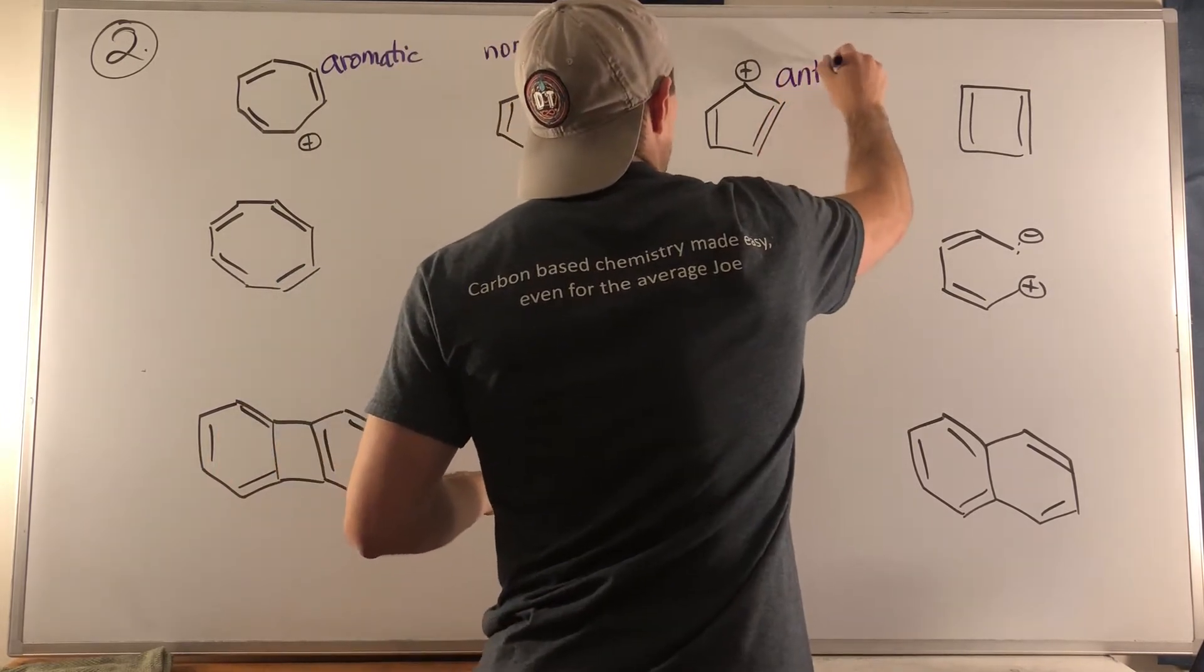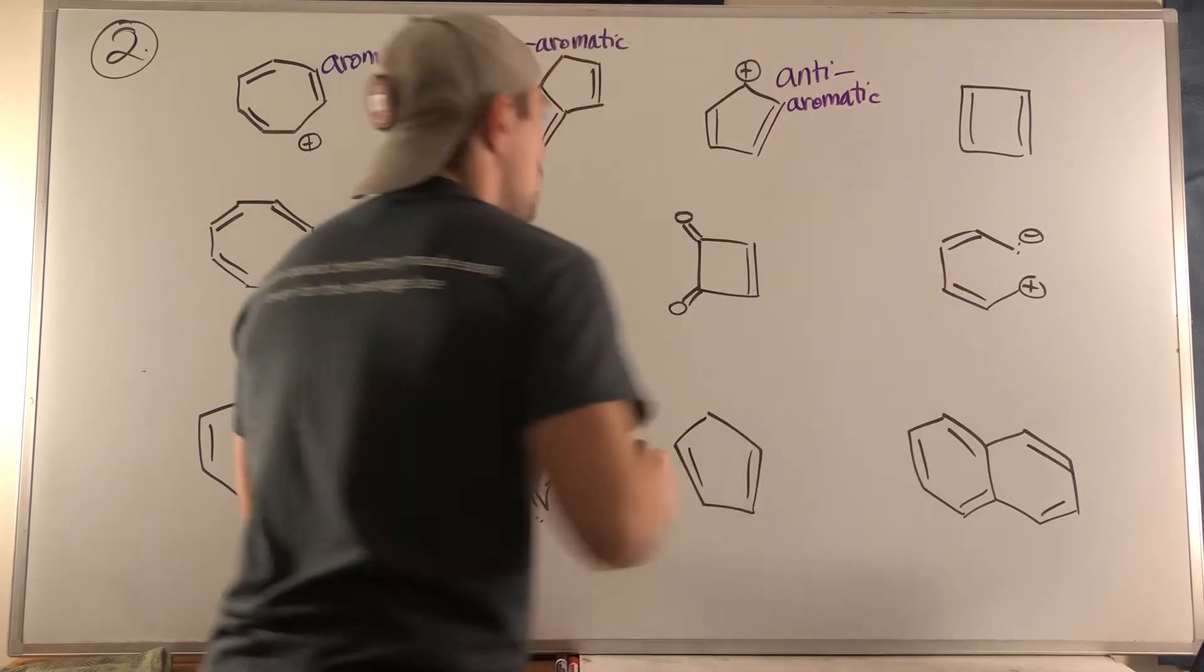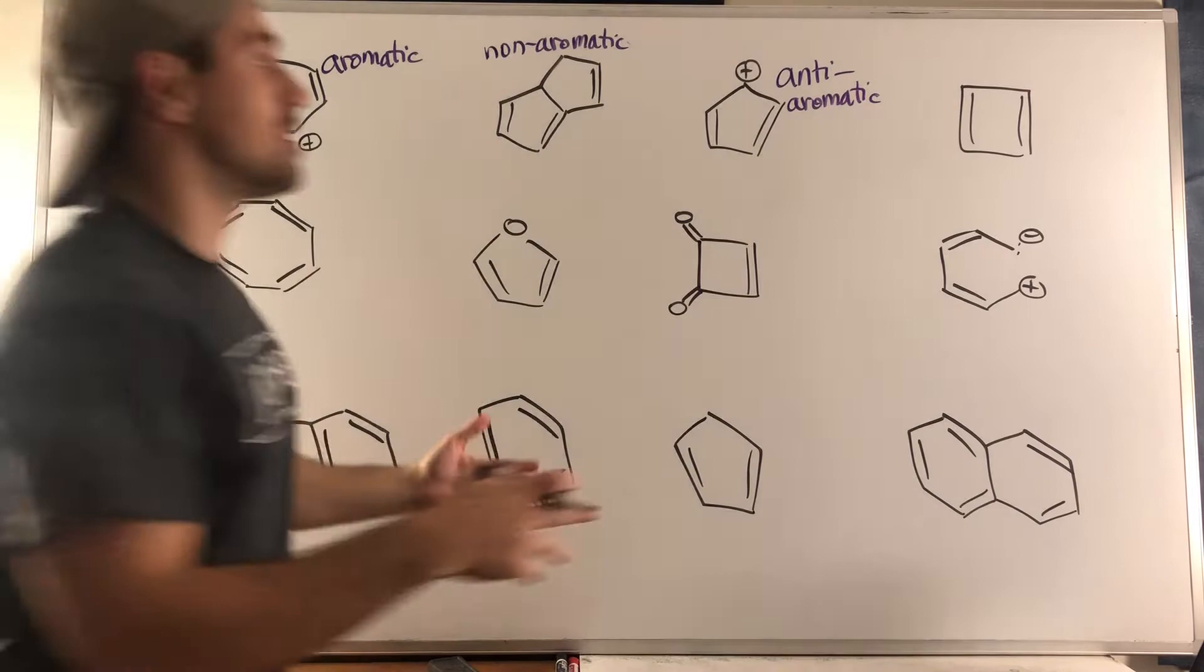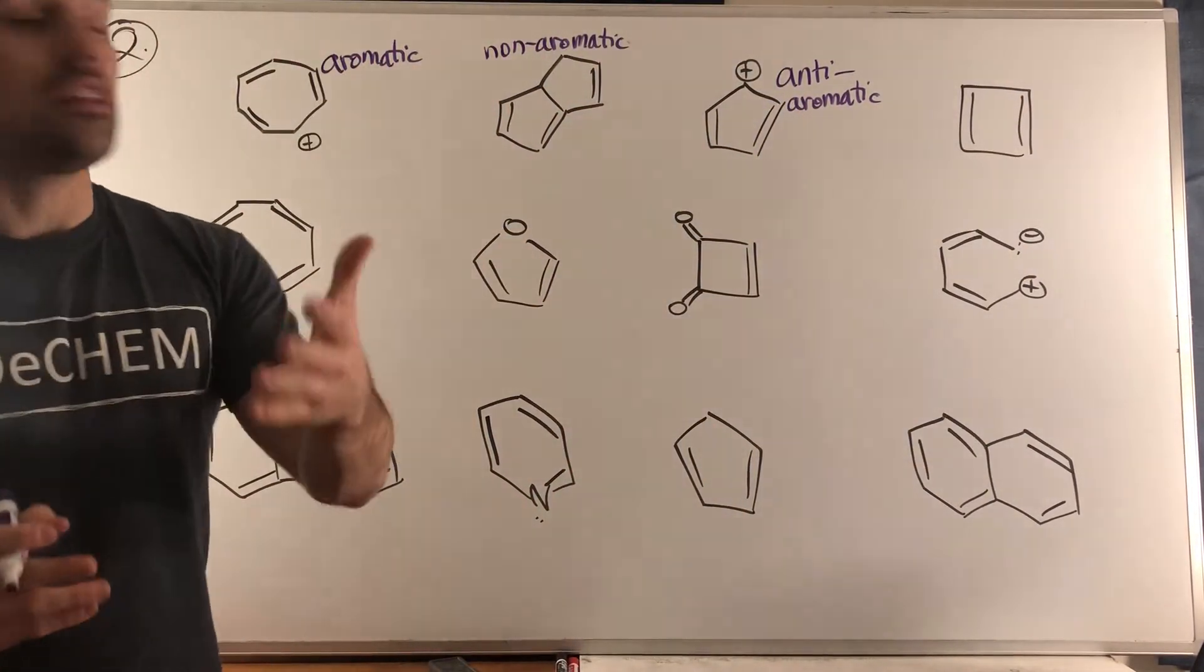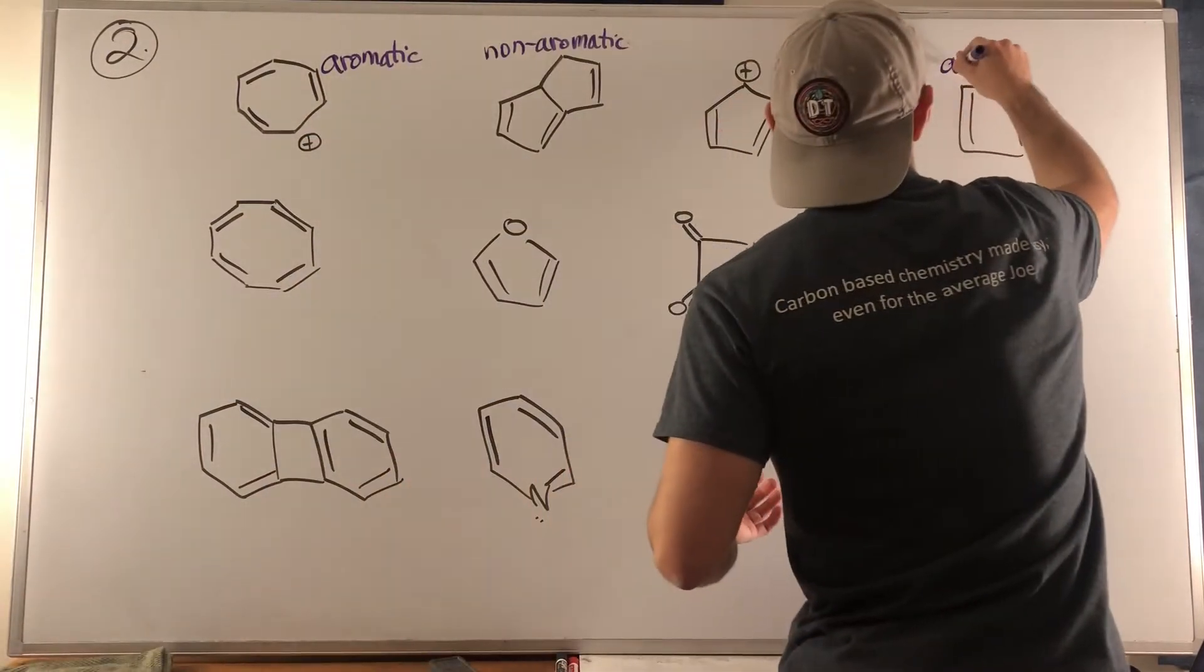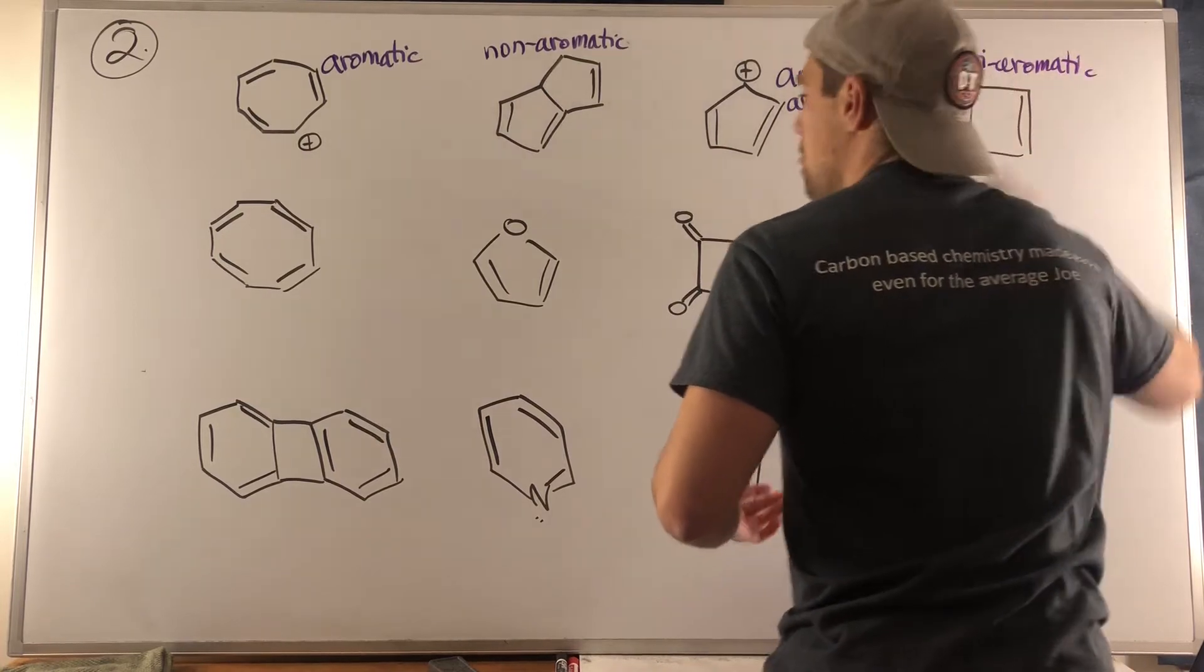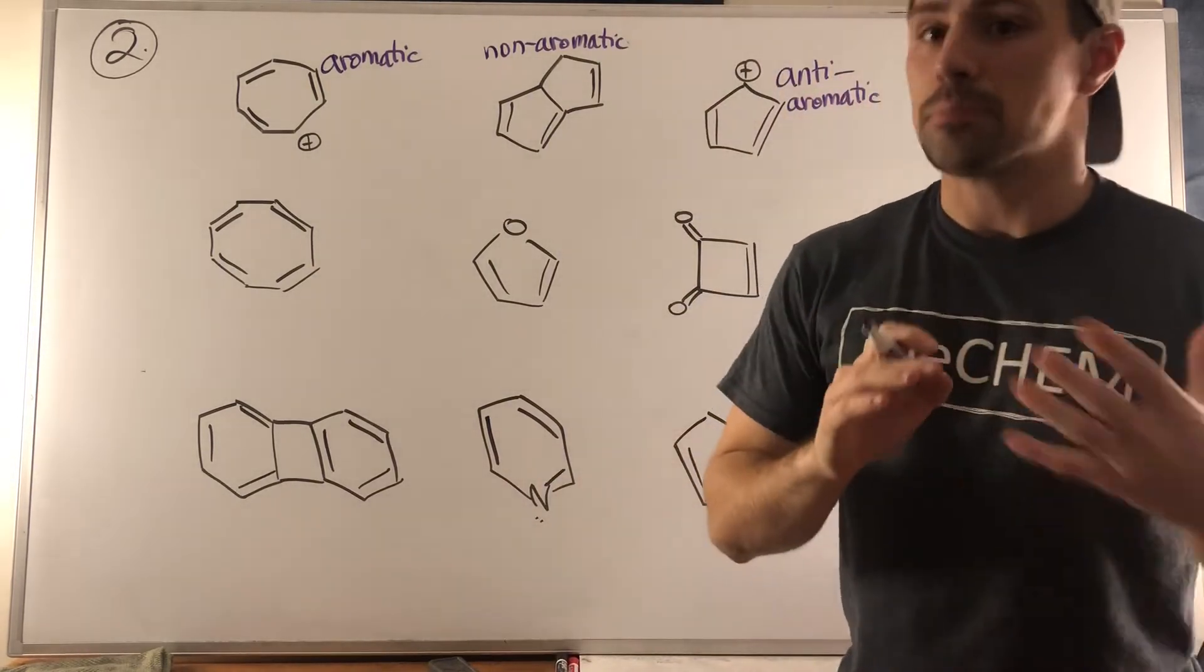If we look at the next door neighbor, almost all the same similarities. Yes we are a ring, yes we are conjugated, flat. The number of pi electrons though, also four, so this is also anti-aromatic.